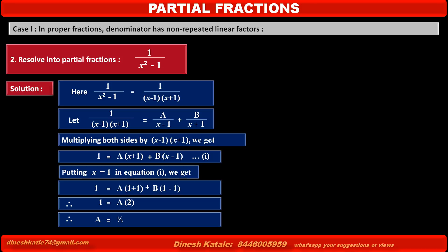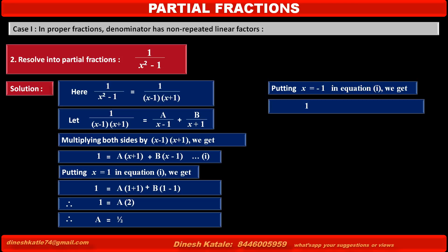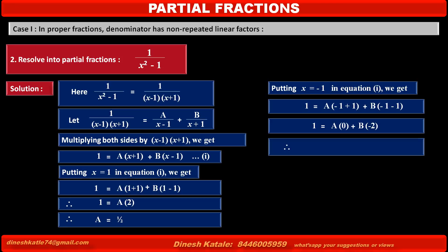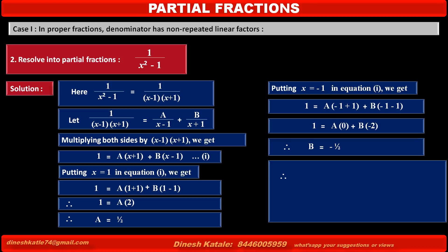To find the value of B, we eliminate the term containing A. Putting x equal to minus 1 in equation 1, we get 1 equals A into minus 1 plus 1 plus B into minus 1 minus 1. This gives 1 equals A into 0 plus B into minus 2. Therefore, the value of B is equal to minus 1 upon 2.